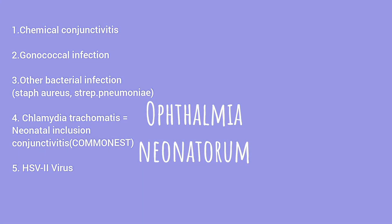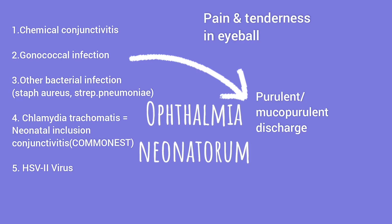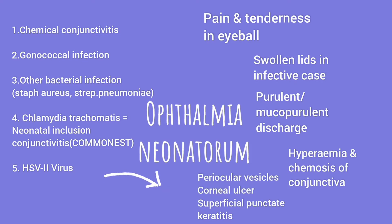This may vary in different books. Let's look at the signs and symptoms. There will be pain and tenderness in the eyeball. Gonococcal cause will lead to purulent discharge, and other bacterial causes will lead to mucopurulent discharge. The conjunctiva is present on the posterior surface of eyelids, so the eyelids will be swollen, and the conjunctiva will show hyperemia and chemosis. Herpes simplex infection is rare, but when it occurs, it causes periocular vesicles.